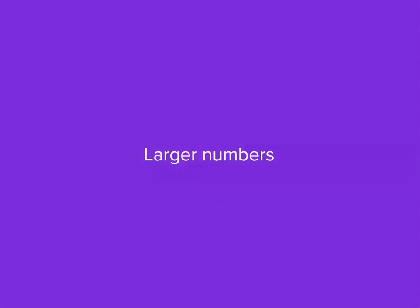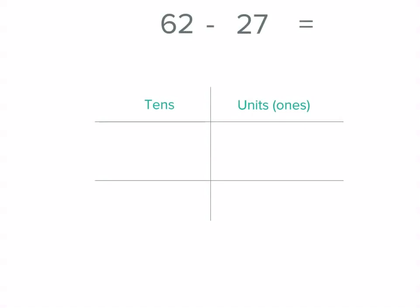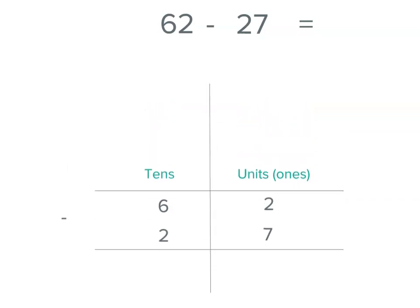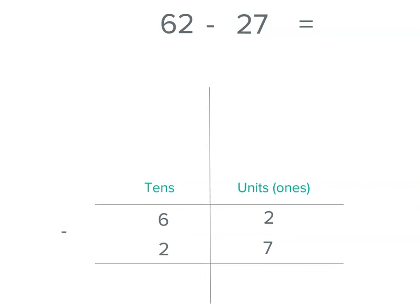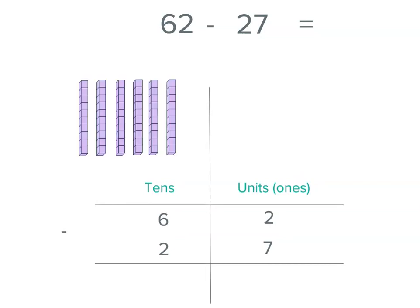Now we've got a larger number here. This time we've got a 2-digit number minus a 2-digit number. Remember, we start with the number that we have as our total, 62, and we subtract 27. So we write that on the line underneath. Now let's use our models again. We use the model of the total we're starting with, 6 tens and 2 units.